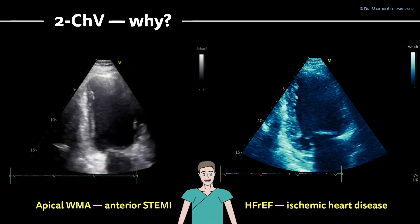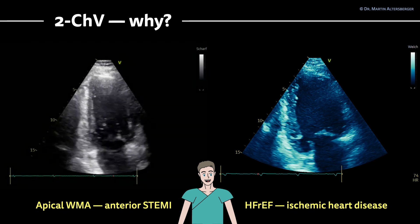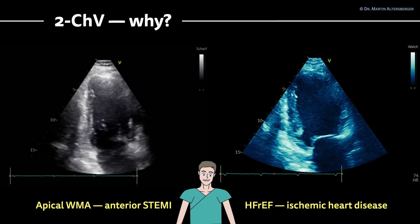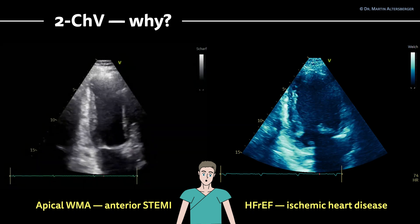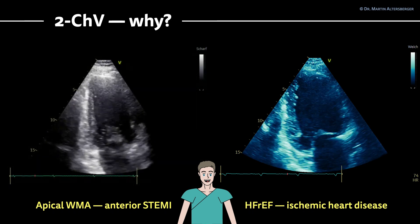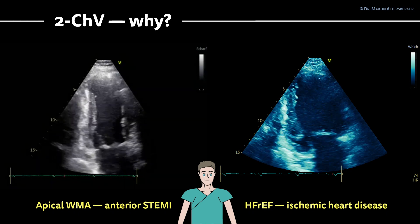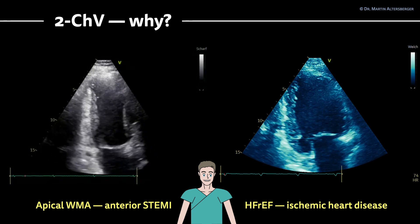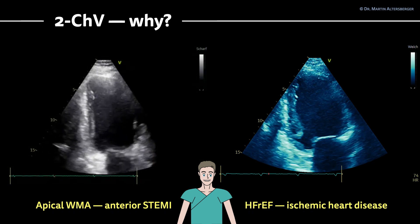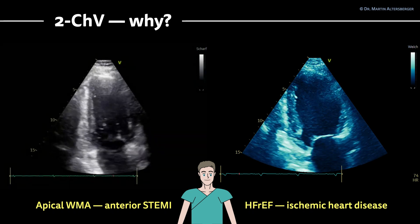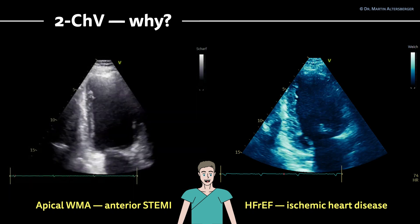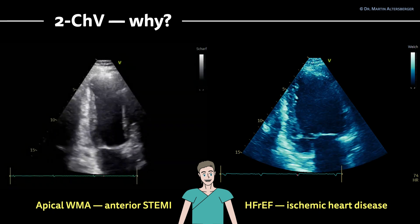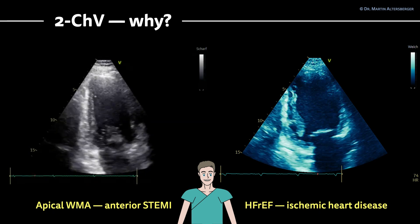Here we have two examples, two patients. We have an apical wall motion abnormality in an anterior STEMI — an anterior ST elevation myocardial infarction — and on the right-hand side we have a HFrEF, heart failure with reduced ejection fraction in ischemic heart disease, where you can see the truly severely reduced left ventricular function.